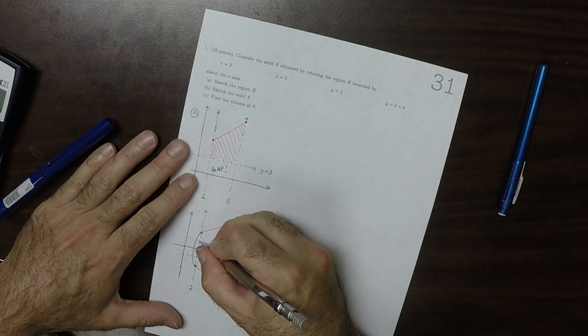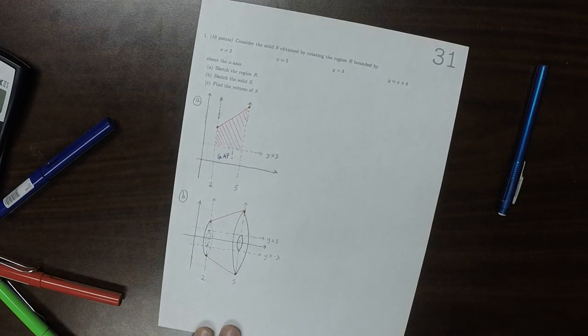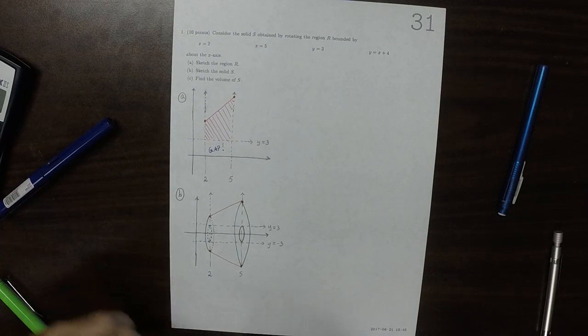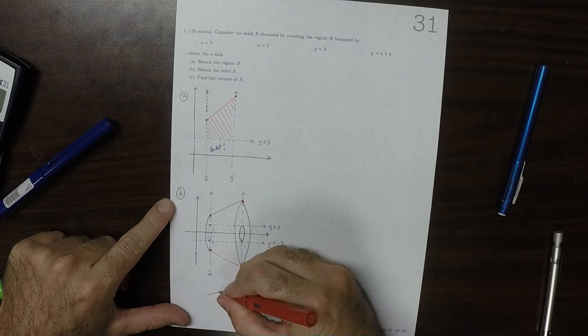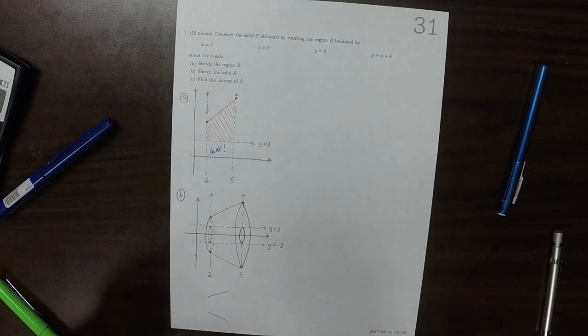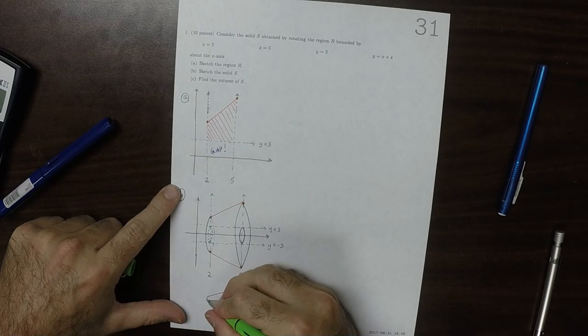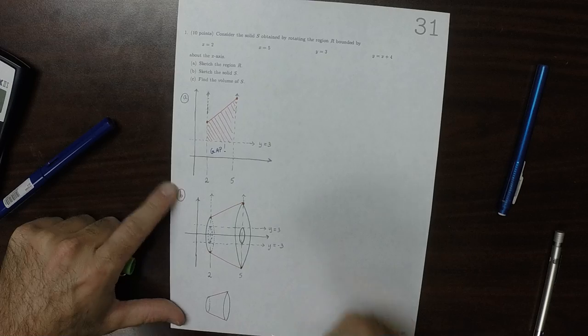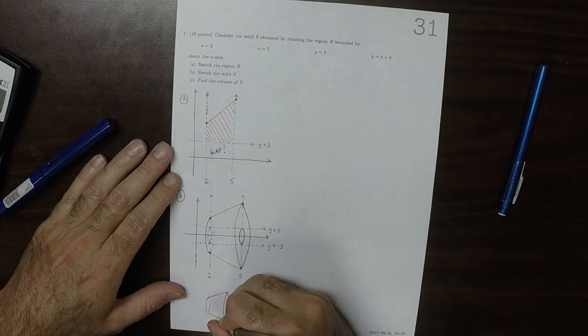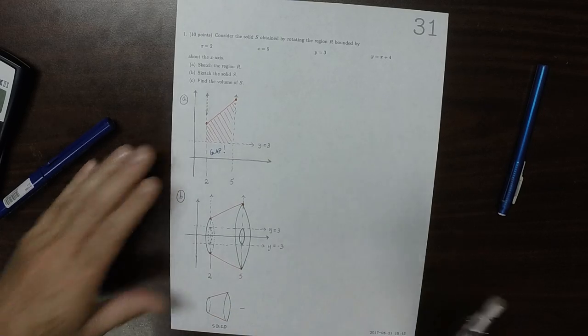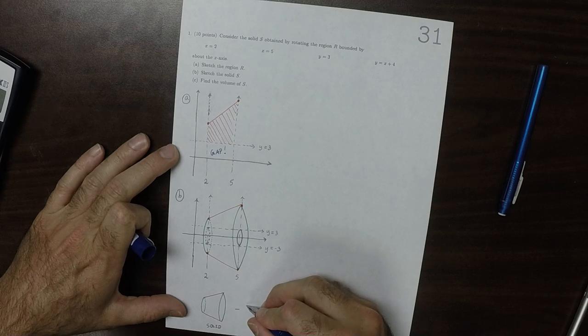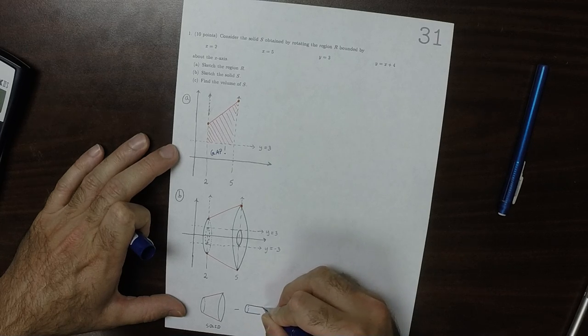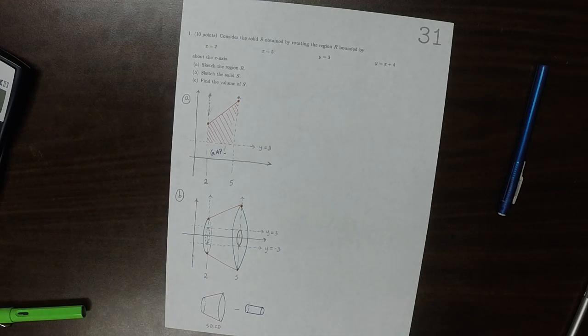And back here we have this. So what this shape is, it's difficult to see just on a sheet of paper, but it is like this whole solid, and then minus this little cylinder in the middle. So it's like that little bit has been carved out.